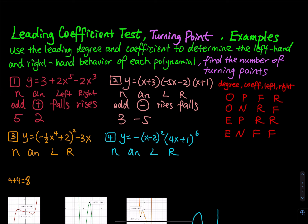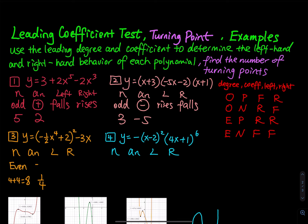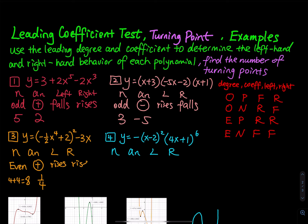For the leading coefficient, you square negative 1/2, which becomes positive 1/4. So the leading degree is even and the leading coefficient is positive — that is EPRR: rises to the left and rises to the right.